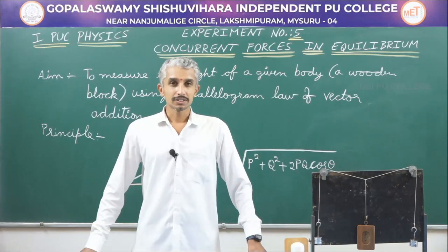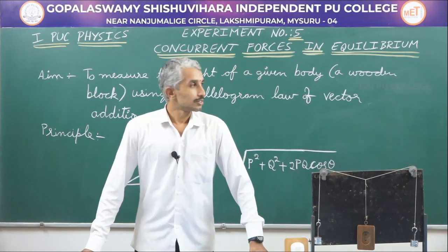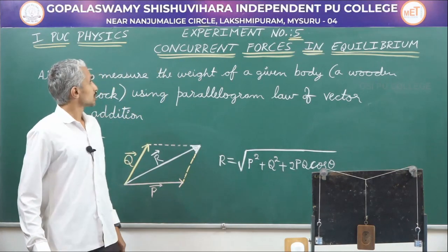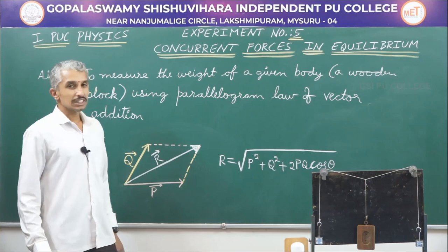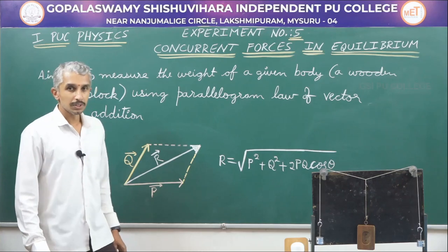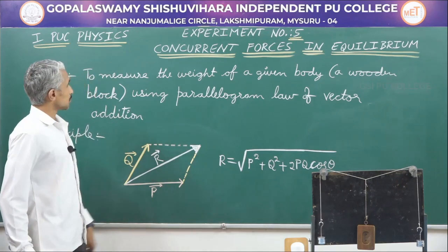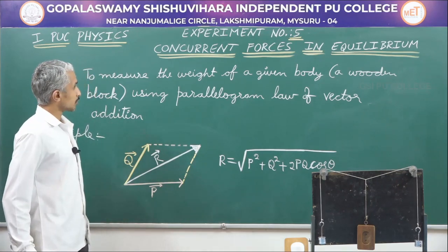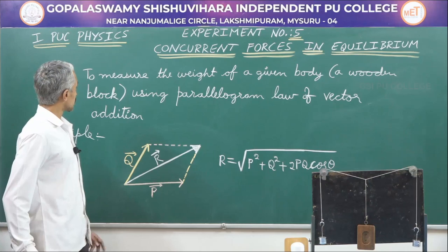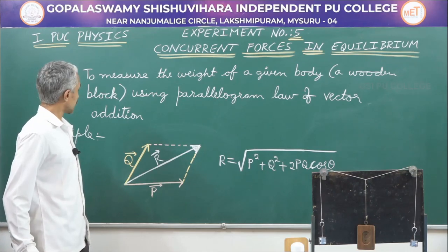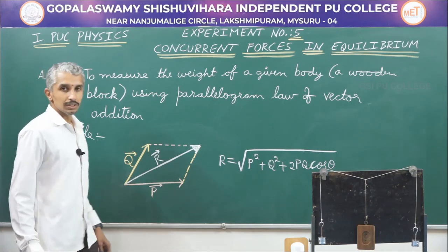Welcome to the online practical sessions. This is experiment 5 of the first PUC, which is concurrent forces in equilibrium. The aim of the experiment is to measure the weight of a given body — a wooden block — using the parallelogram law of vector addition.